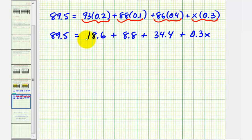Now we'll combine the like terms on the right side or add these decimals. So we'll have 89.5 equals, this sum is equal to 61.8, and we have plus 0.3X.